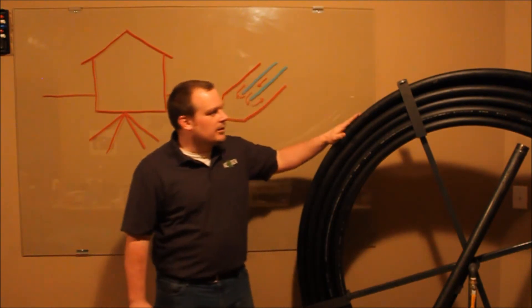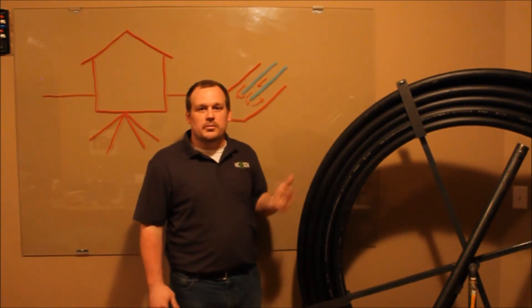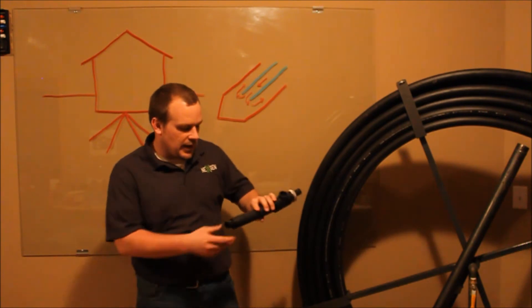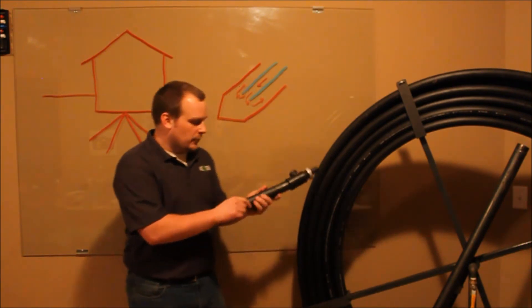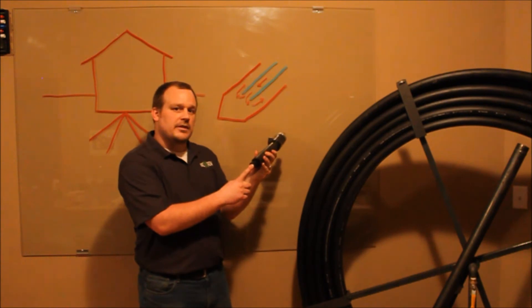Now once we get that outside shell in place, we need to form a loop. And how we do that, here I have an example of an inch and a quarter line and we have a three quarter inch line that we feed down the center.